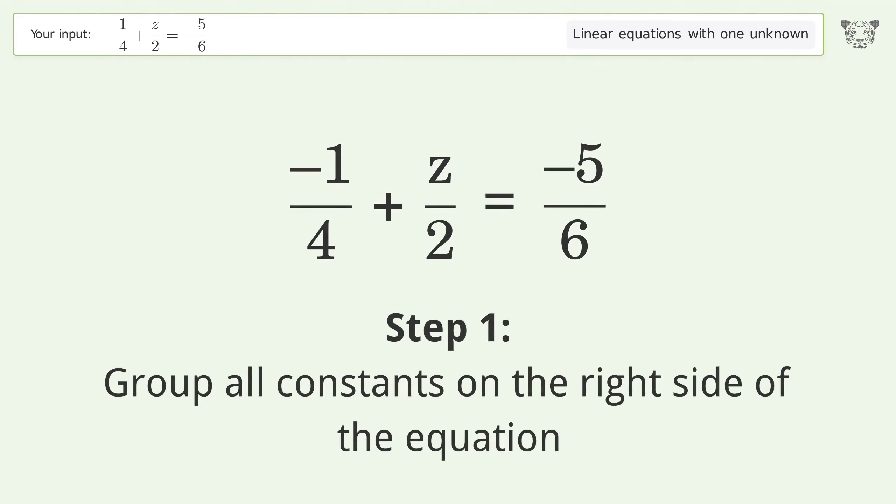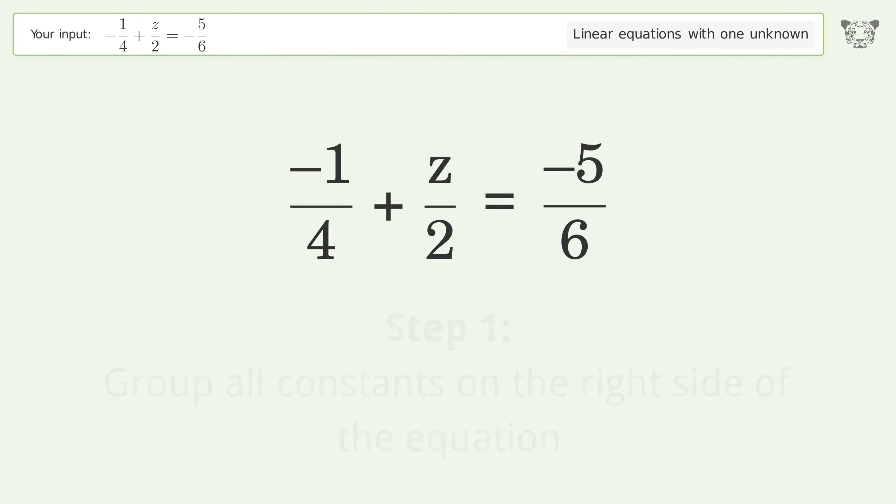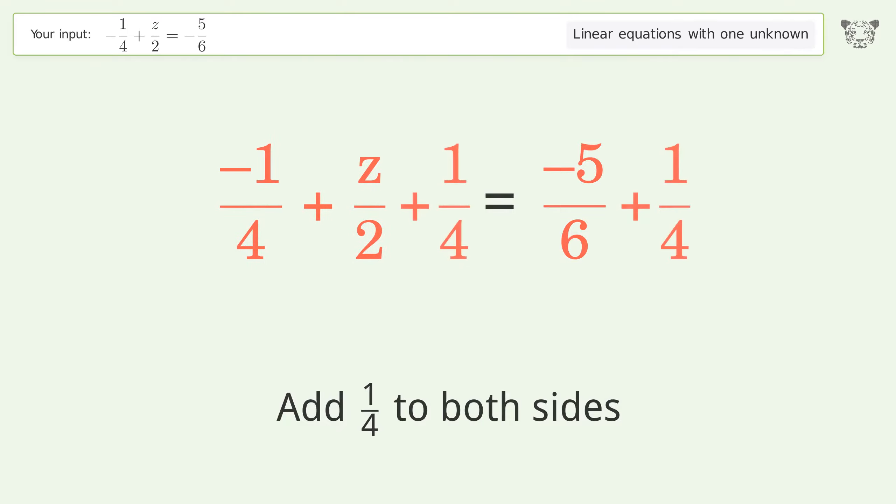Group all constants on the right side of the equation. Add 1 over 4 to both sides. Group like terms.